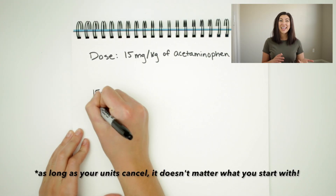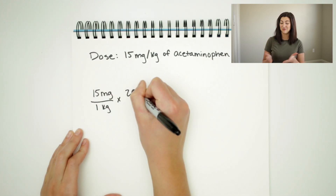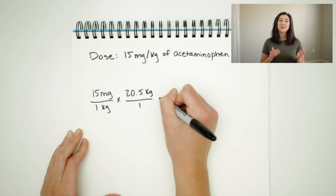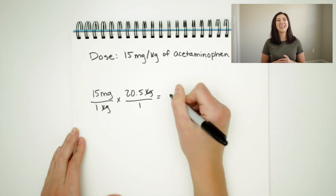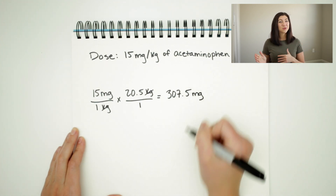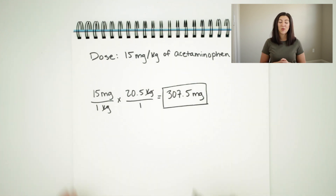Now that our units match — weight in kilograms and dosing in kilograms — we can calculate the dose. We start with our patient's weight, 20.5 kilograms, and multiply by the ordered dose of 15 milligrams per kilogram. Our units cancel nicely, and multiplying through gives us 307.5 milligrams for the dose. Since this answer is greater than one, our rounding rule says we report to the tenths — 307.5 milligrams is already in that form, and we've included units, so this is our final dose.